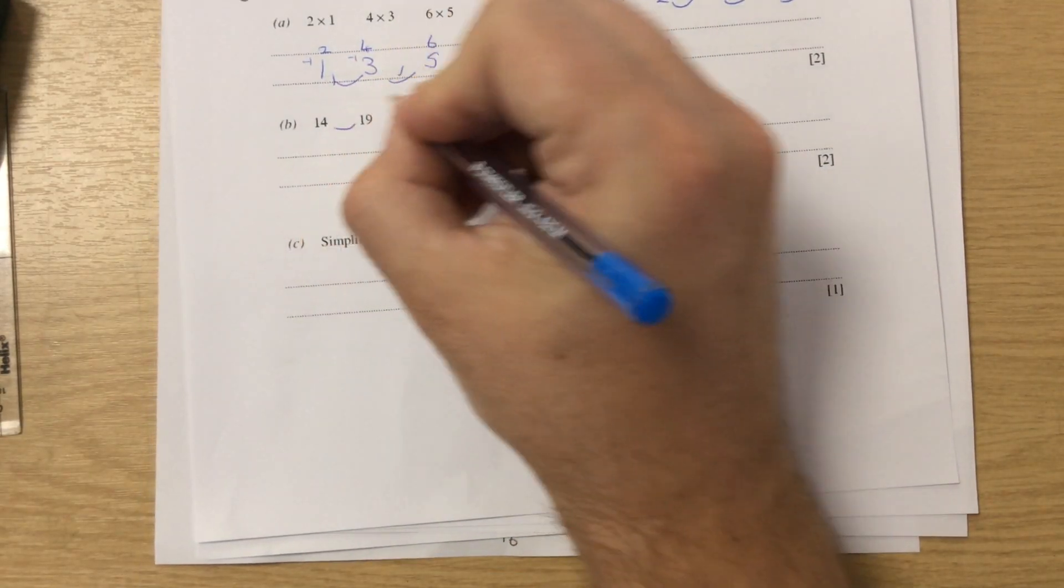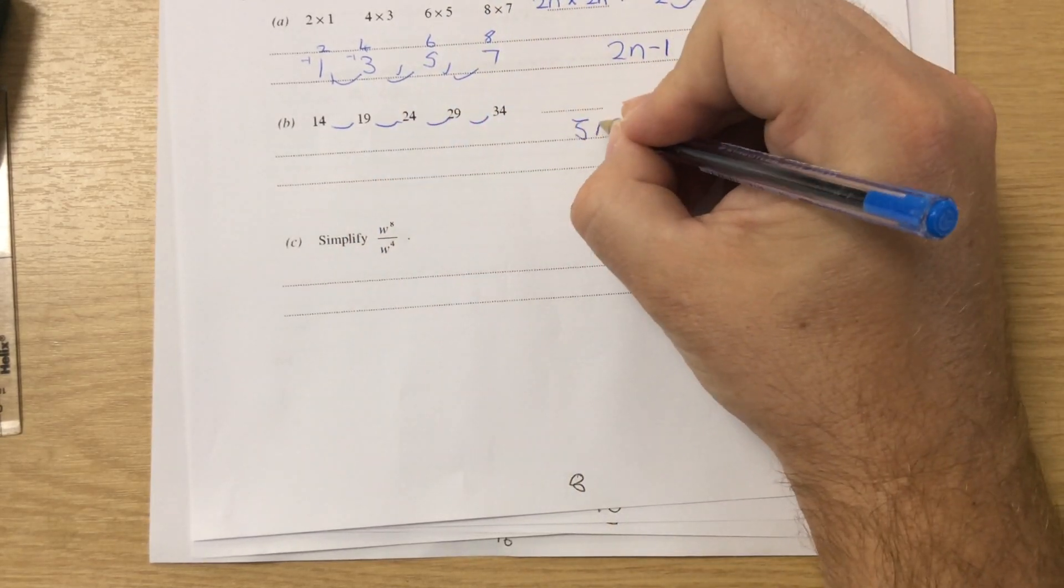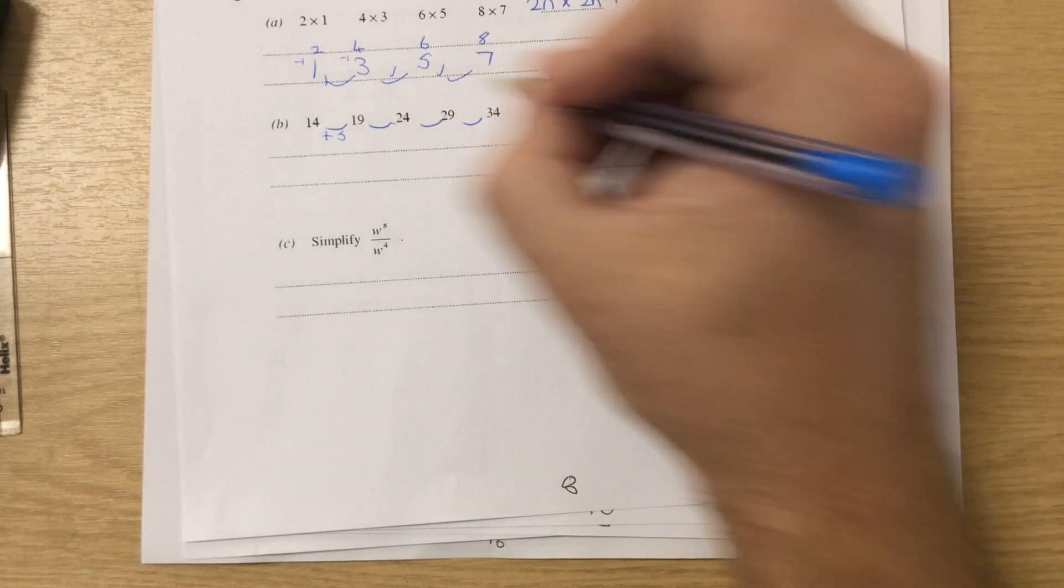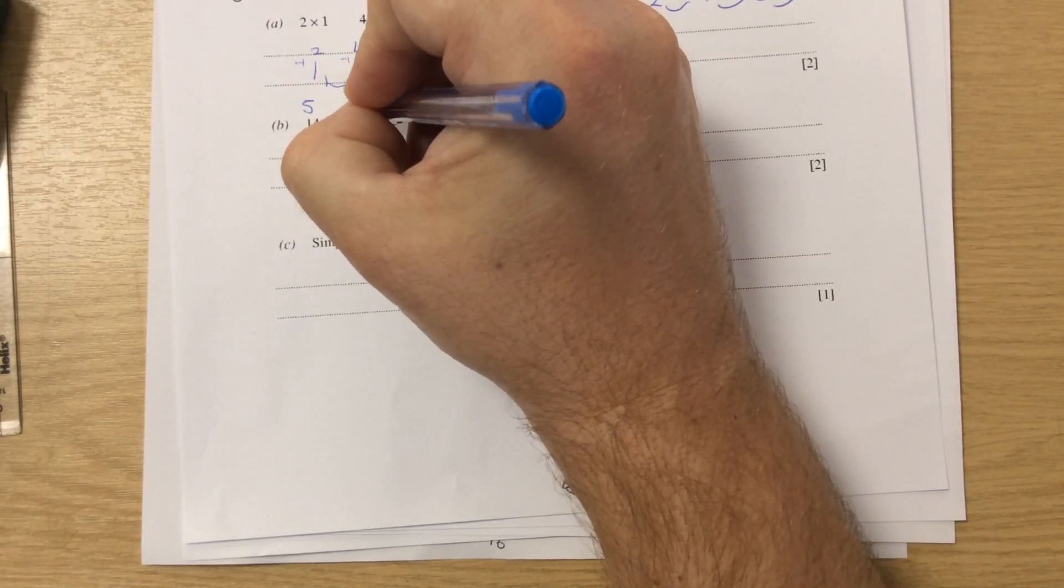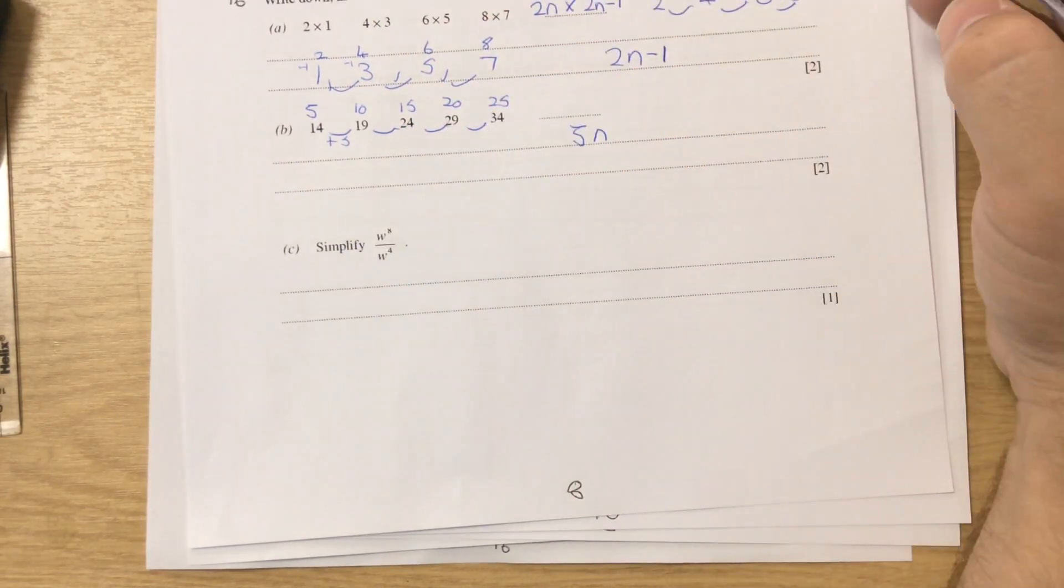Part B, you're working out what it's going up in each time. It's going up in fives. So it becomes 5n. And how would you get from, you write your five times table above it. So 5, 10, 15, 20, 25.